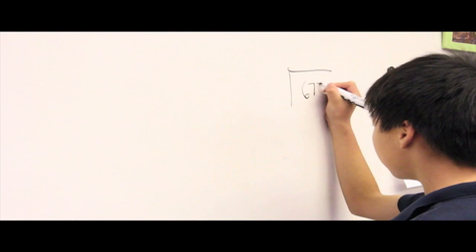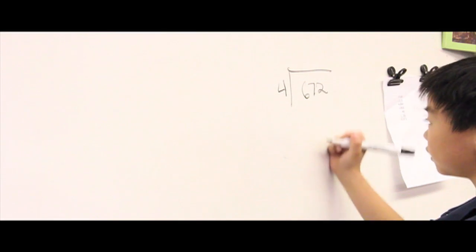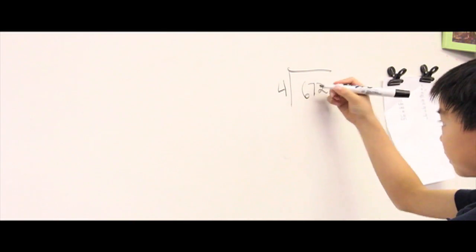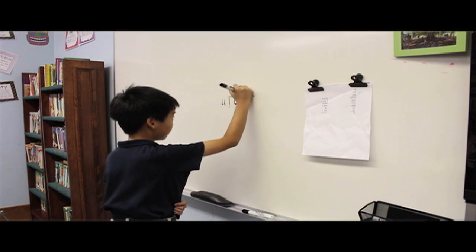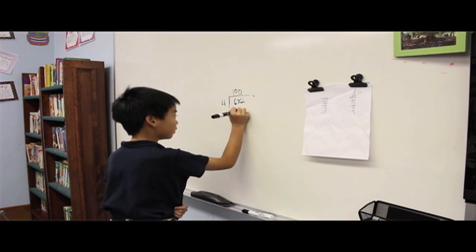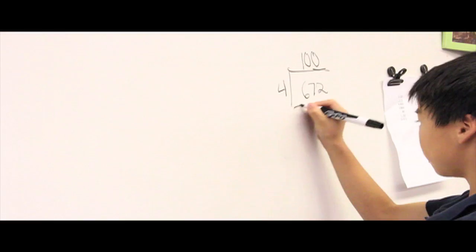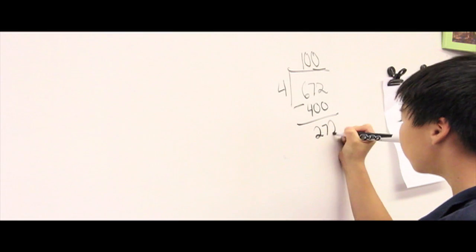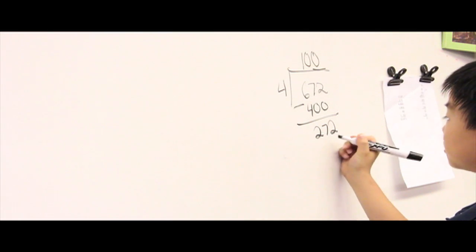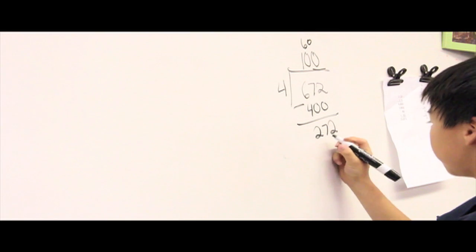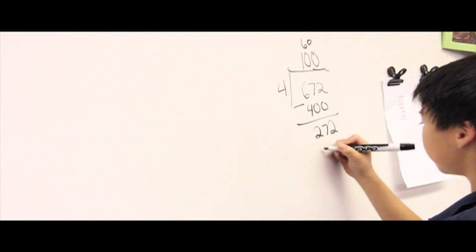672 divided by 4. In division you always have to use friendly numbers. So 4 can go into 672 100 times in friendly numbers. 4 times 100 is 400. 672 subtract 400 is 272. 4 can divide into 272 60 times in friendly numbers. 4 times 60 is 240.